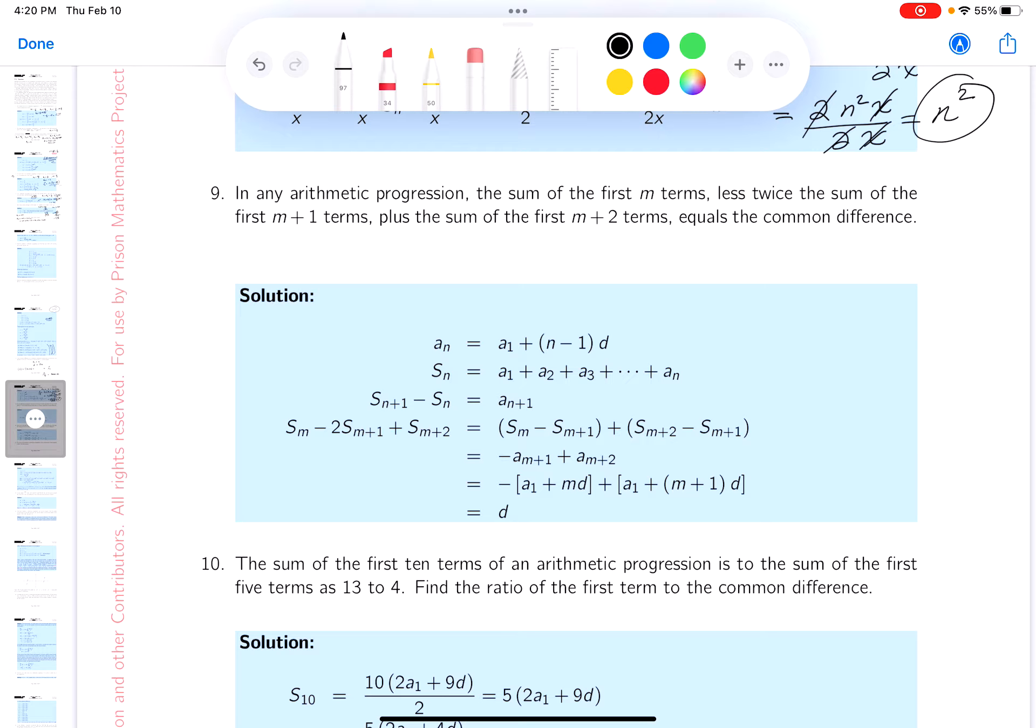It says in any arithmetic progression, the sum of the first m terms less twice the sum of the m plus one terms plus the sum of the first m plus two terms equals the common difference. I'll be honest with you, that's a mouthful. Reading that, I just want to kind of step through it. I'm going to go one step at a time.